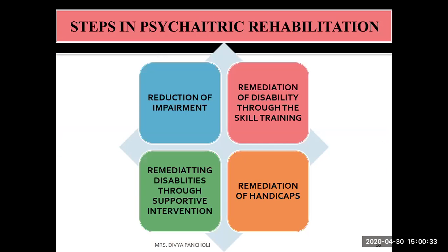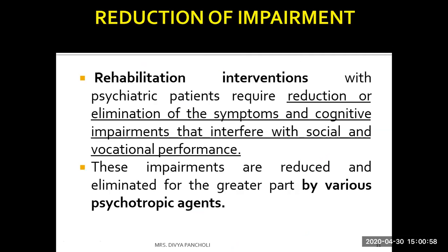The four steps in psychiatric rehabilitation are: reduction of impairment, remediation of disability through skill training, remediating disability through supportive intervention, and remediation of handicaps. The first step — reduction of impairment — means addressing impairment that has already occurred through rehabilitation intervention.